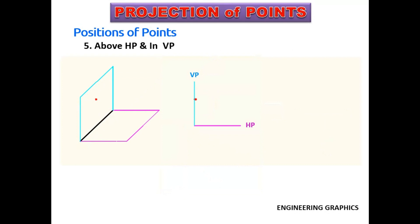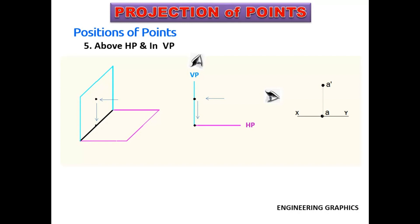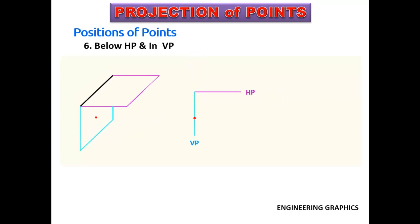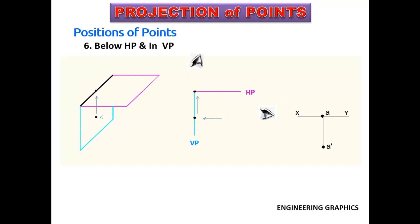In the fifth case, the point is above HP and in VP. Elevation is in the VP, and the plan is on the intersection of VP and HP. Elevation should be drawn above the XY line and plan on the XY line. In the sixth case, the point is below HP and in VP. Elevation should be drawn below the XY line and plan on the XY line.